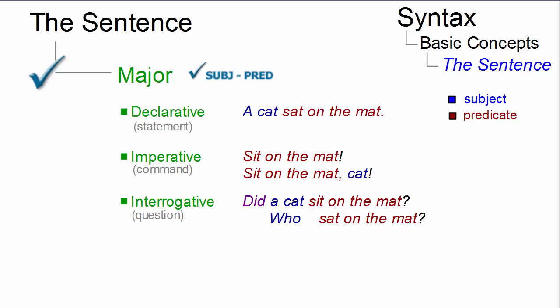Interrogative sentences or questions either involve subject-operator inversion or a WH element as a question word. And exclamatory sentences or exclamations are introduced by a WH element but do not involve inversion.